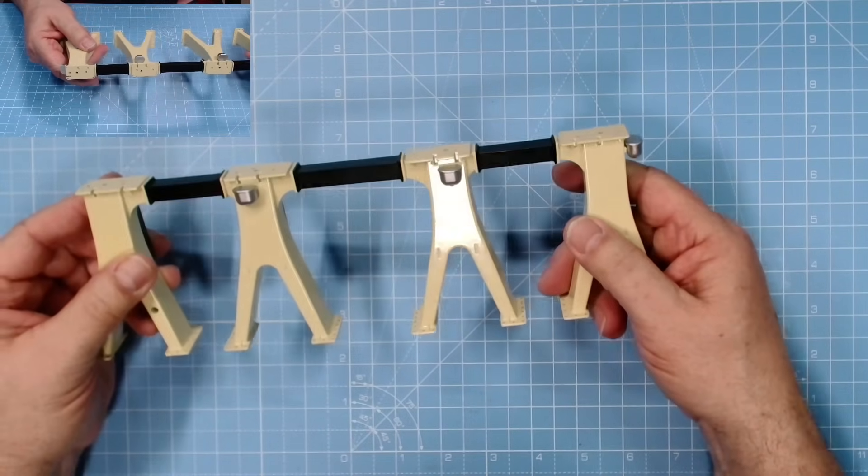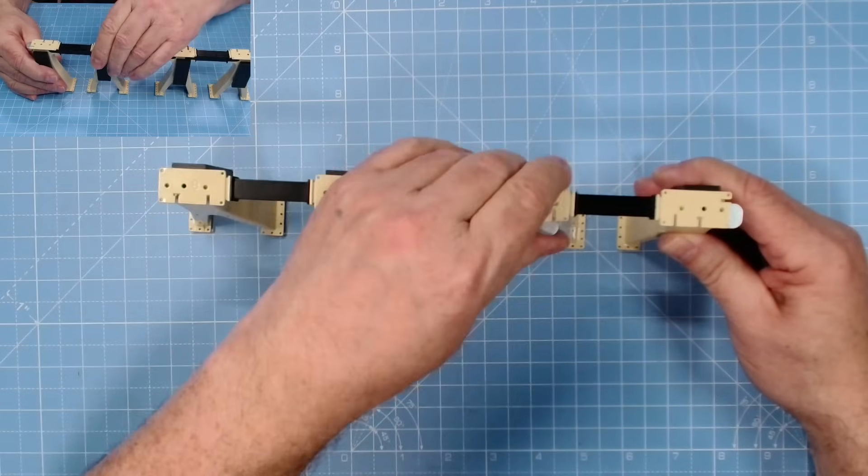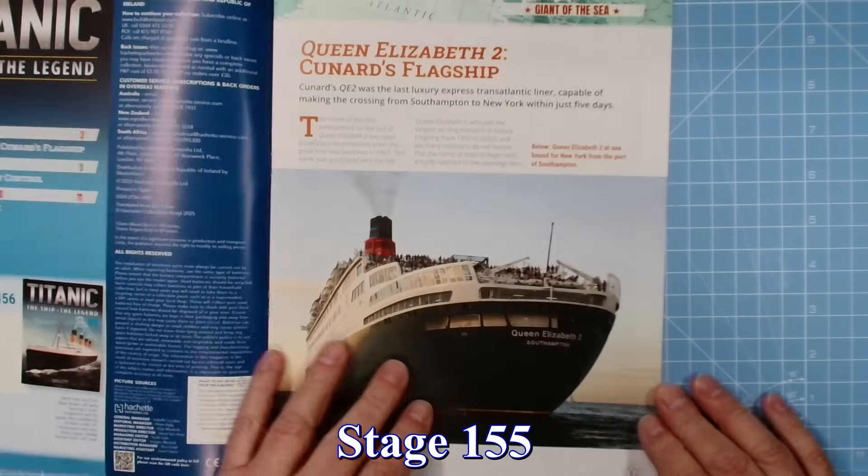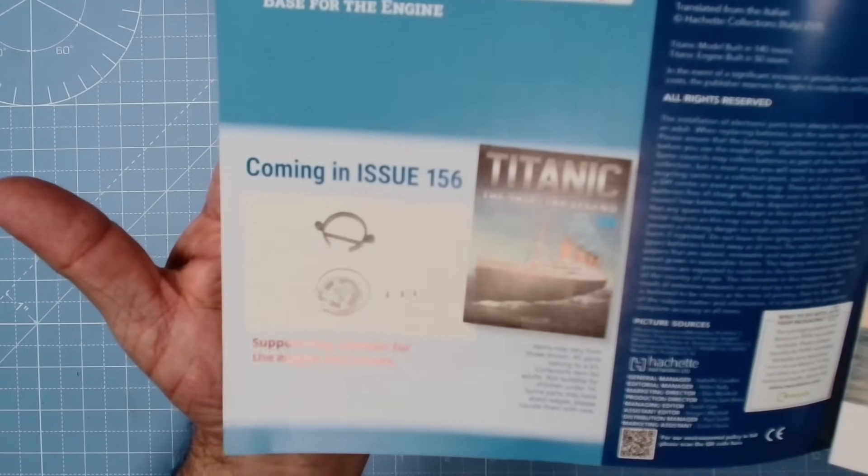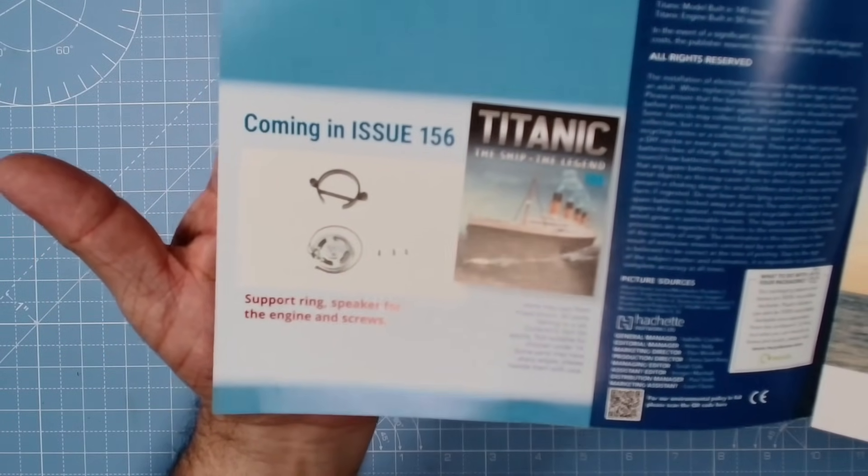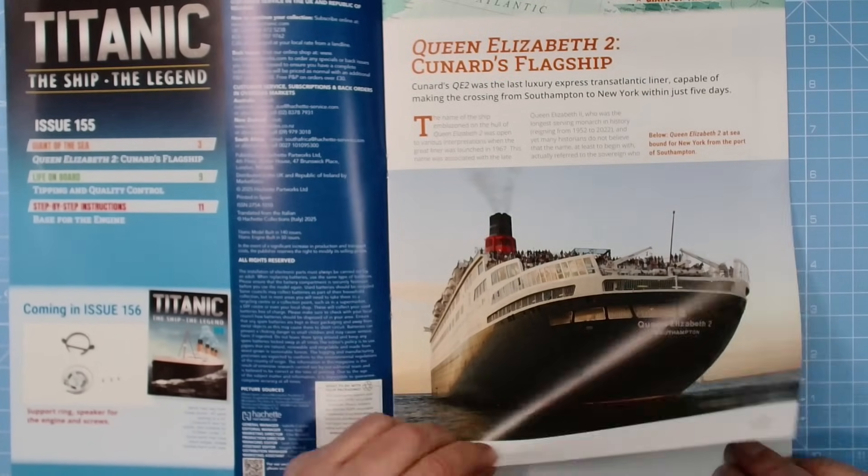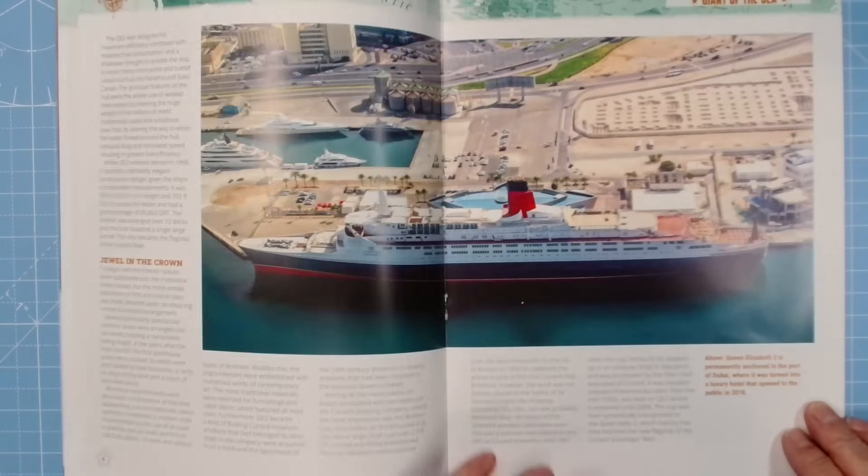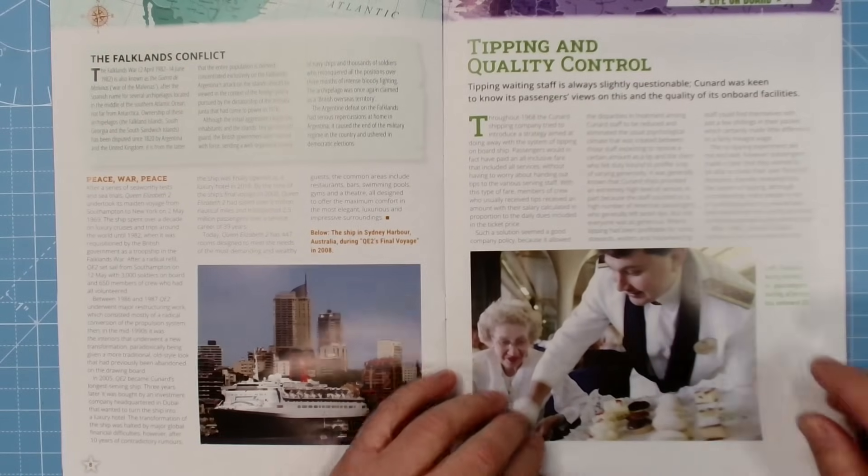That's how it looks. Looking cool, is it not? Brilliant stuff. All right, let's move on to stage 155. Okay now 155 coming in stage or issue 156, support ring, speaker for the engine and the screws. Simple enough. And here we are in the mag, Queen Elizabeth II, Cunard's flagship, never been on Cunard. Oh that's looking cool, beautiful shape, tipping and quality control.